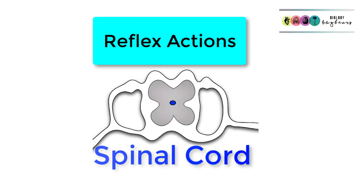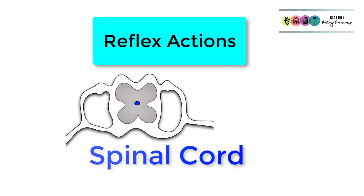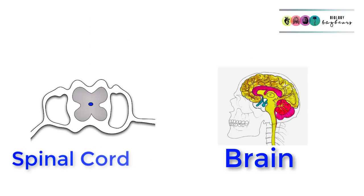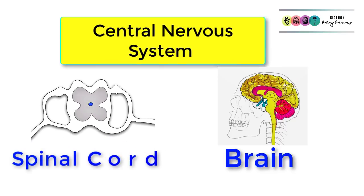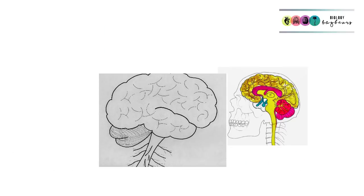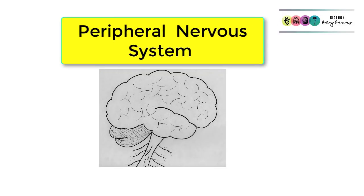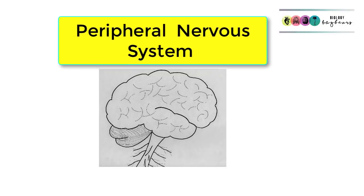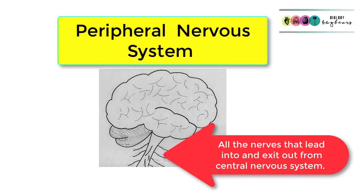Reflex actions are controlled by reflex arcs within the spinal cord. The spinal cord together with the brain makes up the central nervous system, and all the nerves that link into and out of the central nervous system make up the peripheral nervous system.